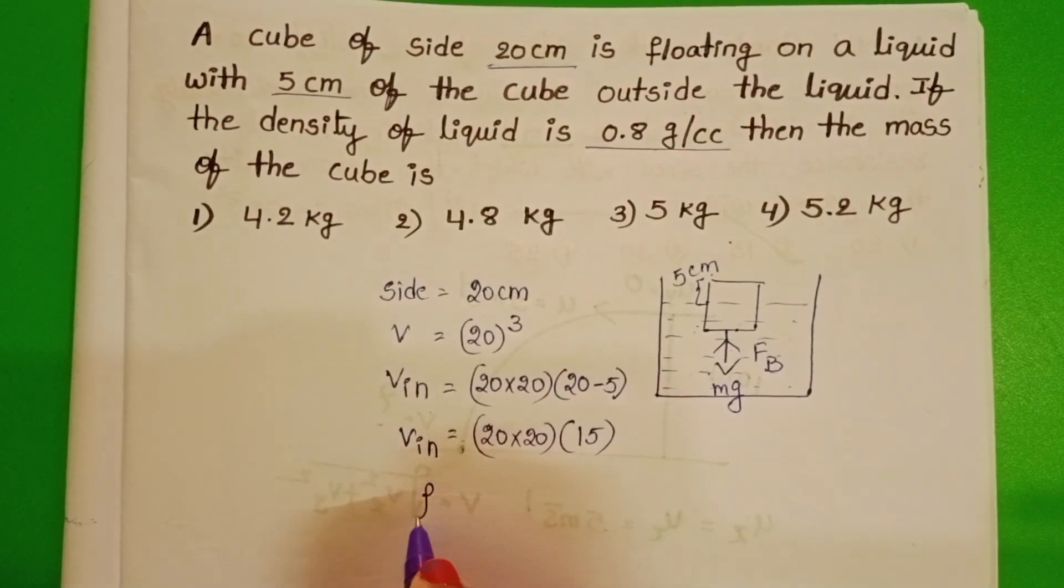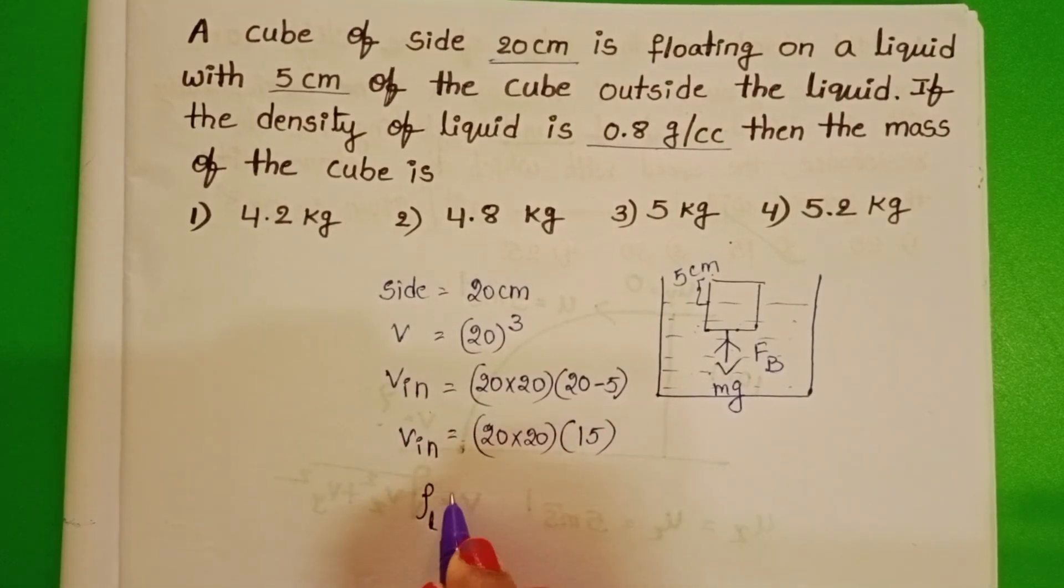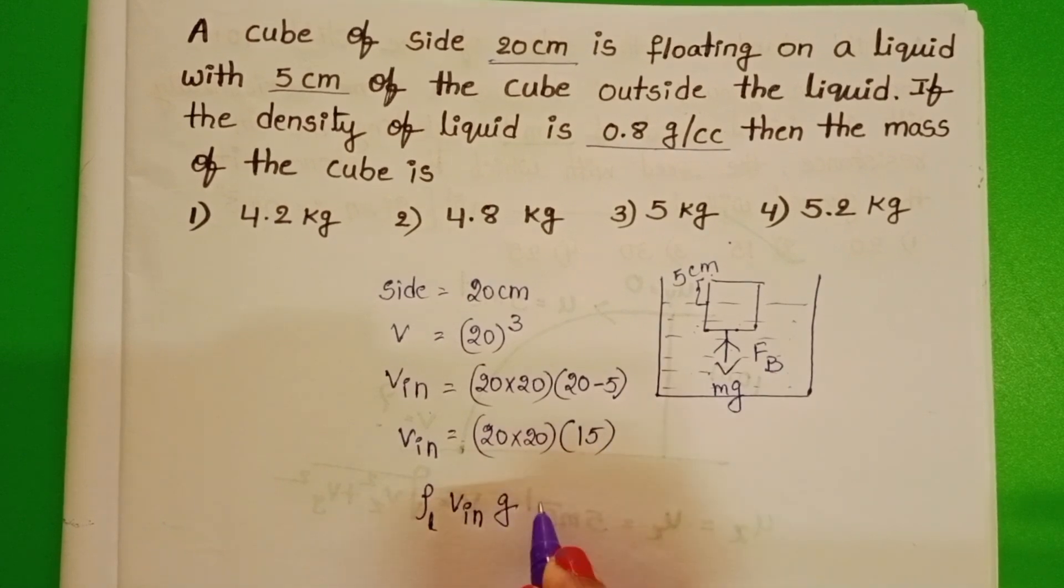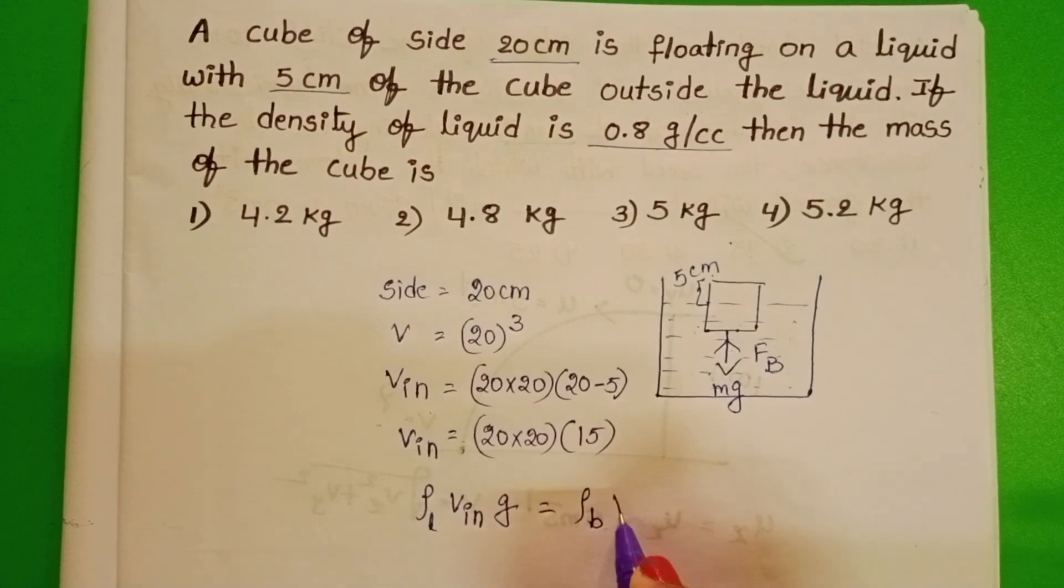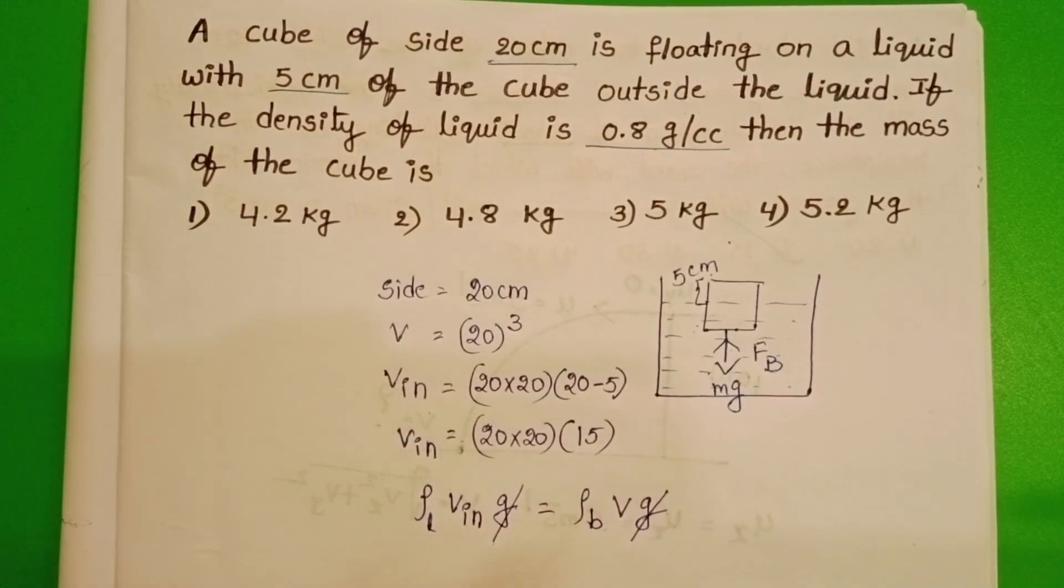Buoyant force equals density of the liquid times volume of the cube inside the liquid times acceleration due to gravity. This equals density of the body times volume of the body times g. Here g cancels.